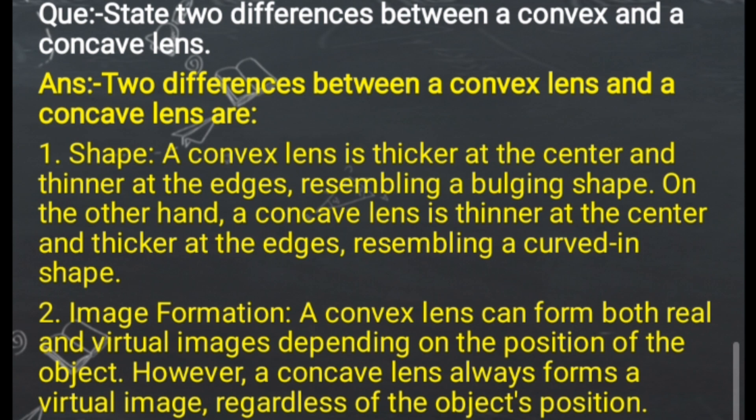Always keep in mind: the concave lens always forms a virtual and erect image. No matter where you place the object, it makes no difference — the image will always be virtual and erect. But in the case of the convex lens, if you change the position of the object, the characteristics of the image will also change. So these are the two main differences between a convex and concave lens.